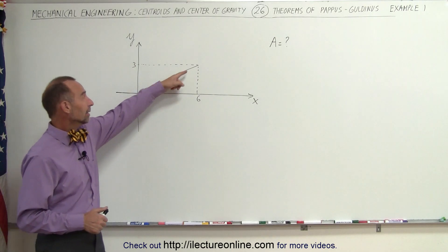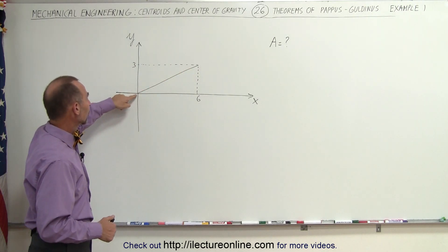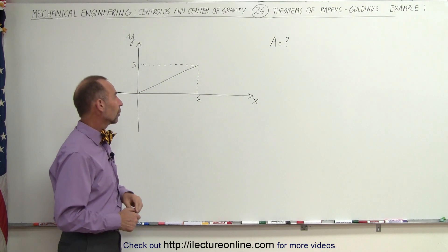Here we have a line, a line segment, runs from 0,0 to 6,3 on the coordinate system.